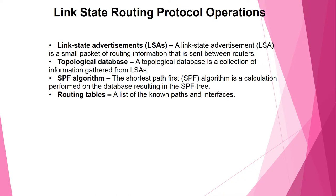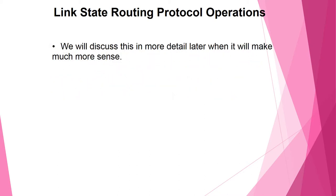Link state routing protocol operation: a Link State Advertisement (LSA) is a small packet of routing information sent between routers. A topological database is a collection of information gathered from LSAs. The SPF (Shortest Path First) algorithm is a calculation performed on the database, resulting in the SPF tree and routing table — a list of known paths and their costs. We will discuss link state routing protocol operation in more detail later.